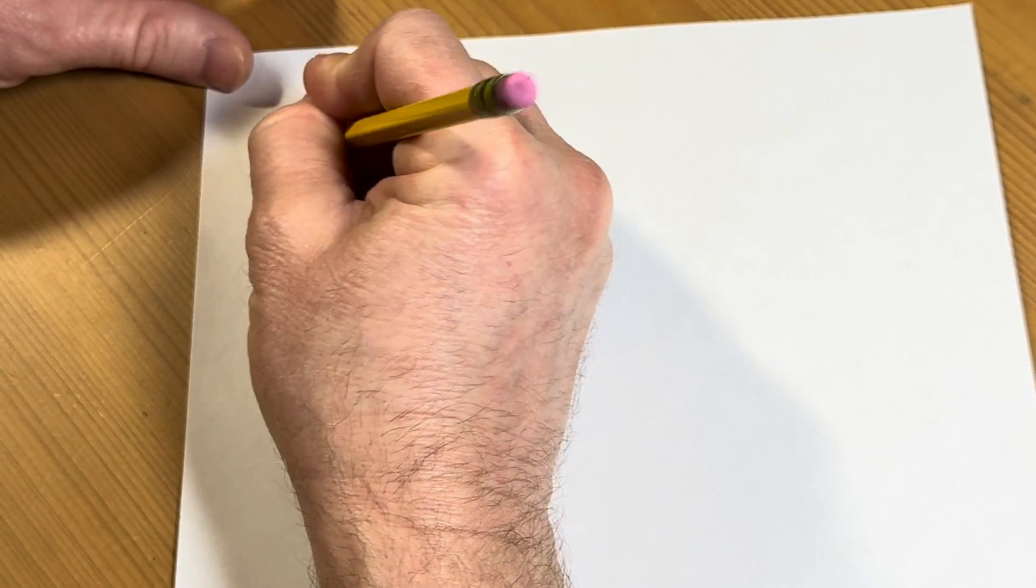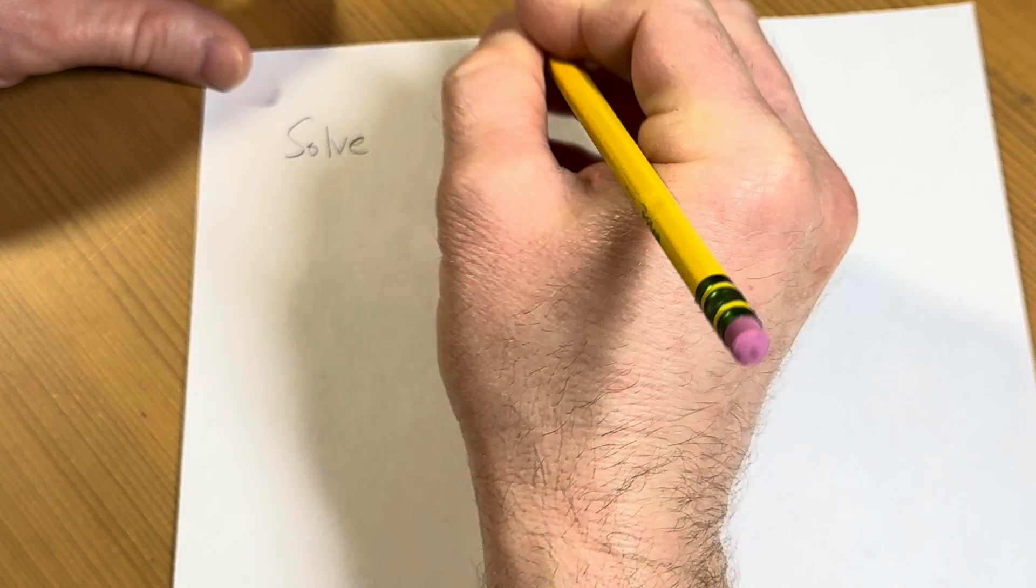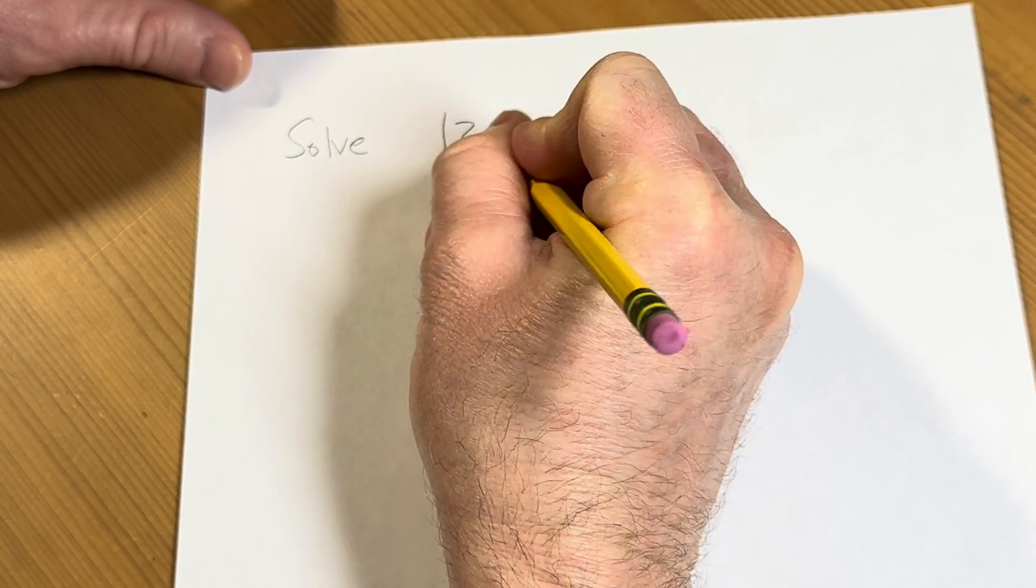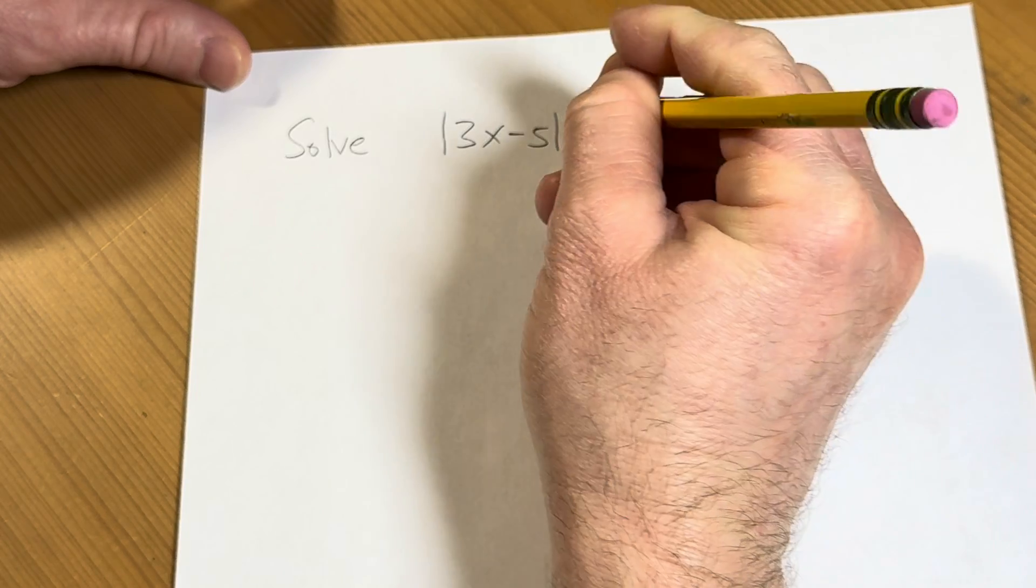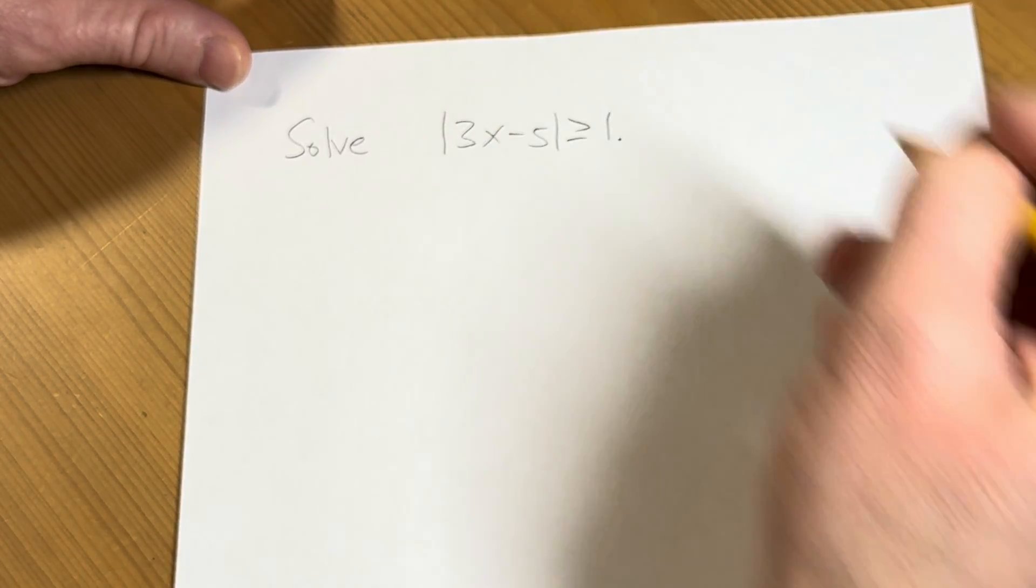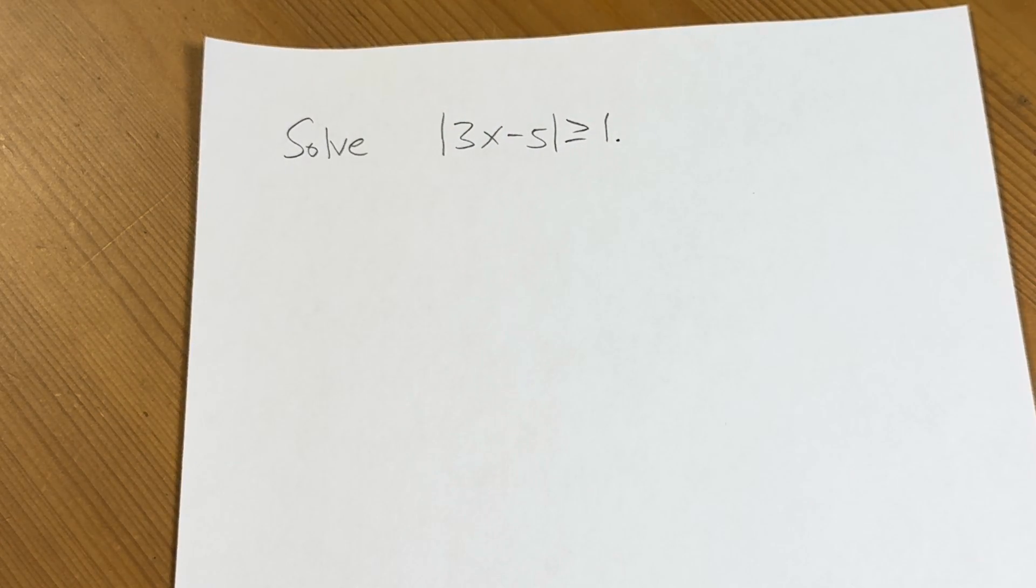So the question is to solve, it's a simple question, but it does require some knowledge. The absolute value of 3x minus 5 greater than or equal to 1. Okay, so let's go ahead and go through this carefully.